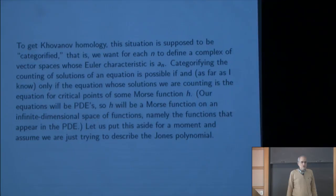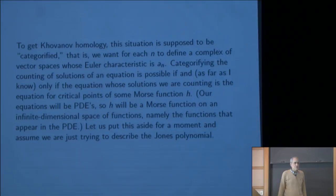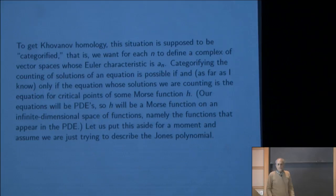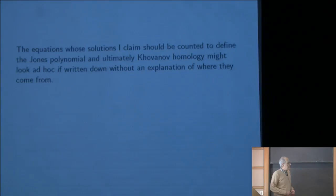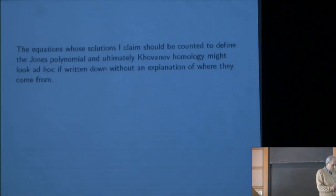The method by which categorification is possible will be familiar to anyone who's worked on subjects such as Floer theory in two or four dimensions, and therefore fits into this workshop. The equation whose solutions we're supposed to count to get the Jones polynomial and Khovanov homology might look a little bit ad hoc if written down without an explanation of where they came from. So I could have started today's lecture by explaining the physical setup.